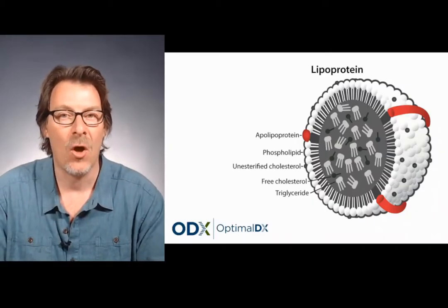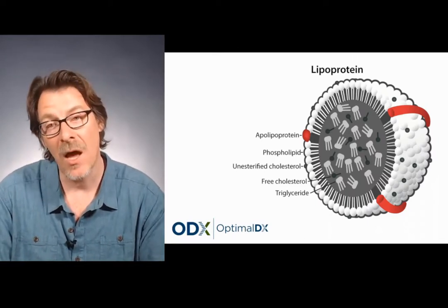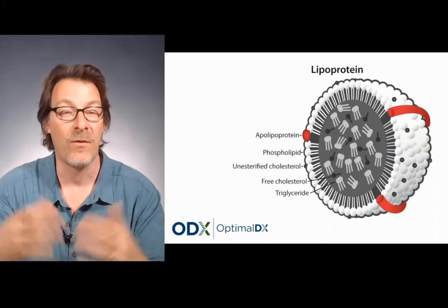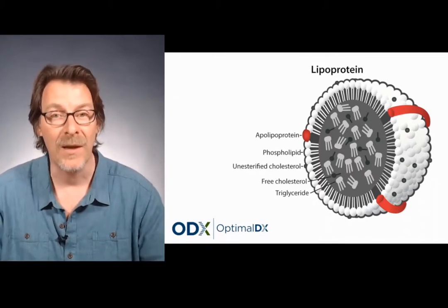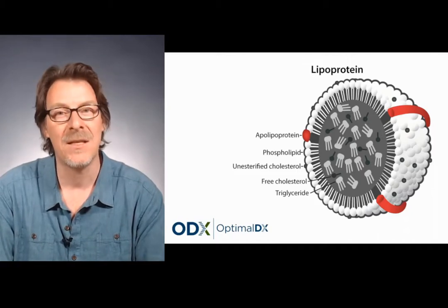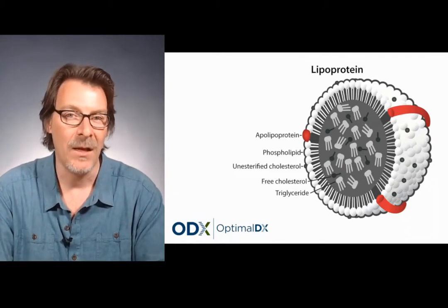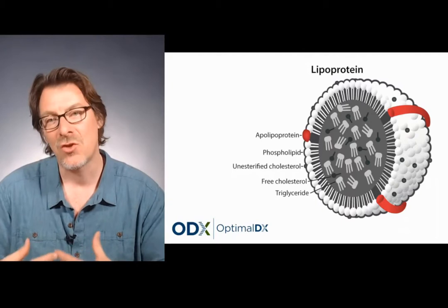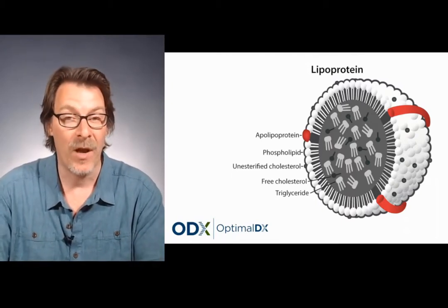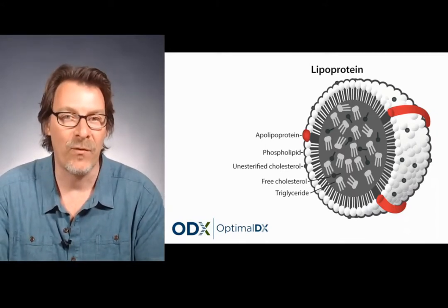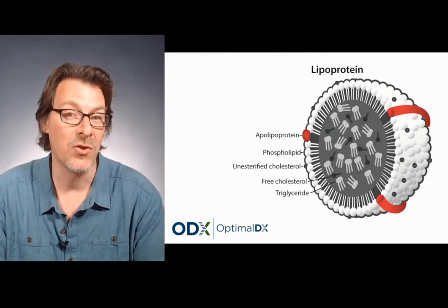Here we have an image of a lipoprotein. On the outside of the lipoprotein are the apolipoproteins — the proteins that help keep that lipoprotein together. The main lipoproteins we're all familiar with, measured on lipid panels, are of course high-density lipoproteins, commonly known as HDL, and low-density lipoproteins, or LDL. The lipoprotein is the vehicle transporting cholesterol around the body. Along with the apolipoproteins on the outside, we have esterified cholesterol, free cholesterol, phospholipids, and lipoproteins also transport triglycerides.